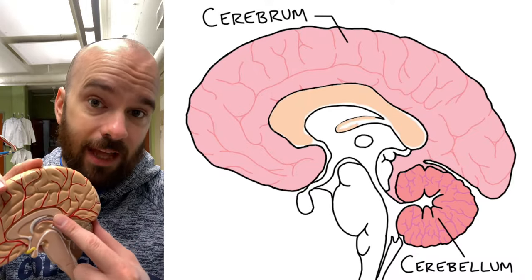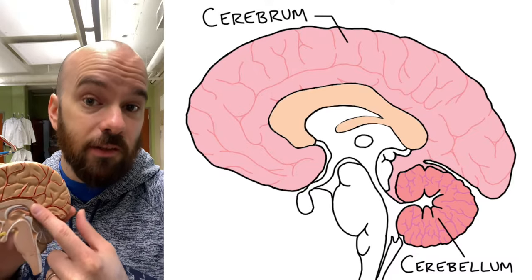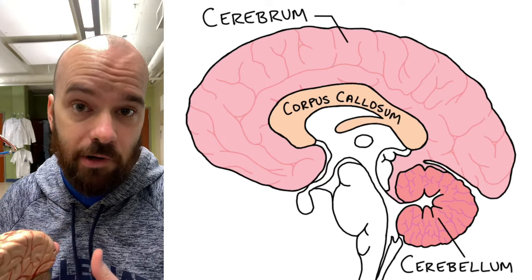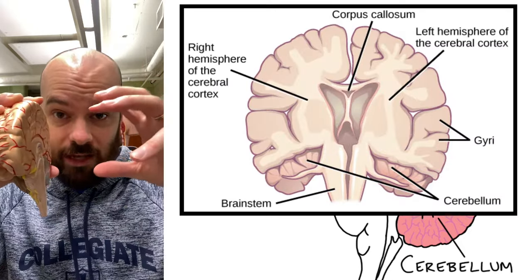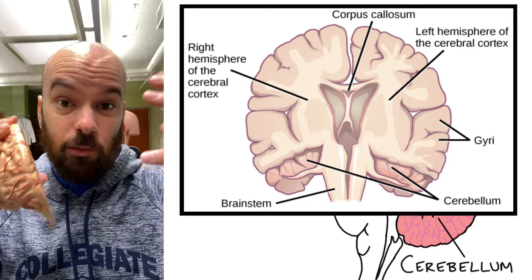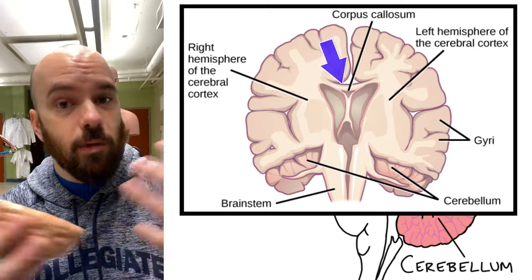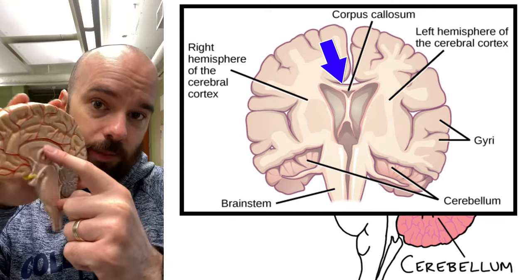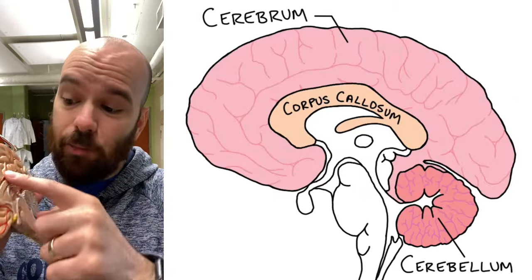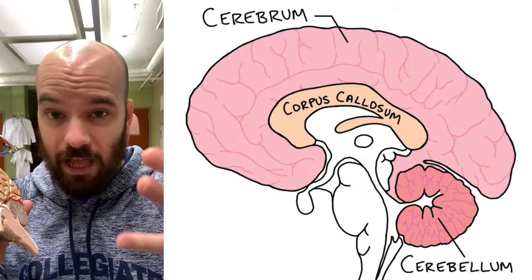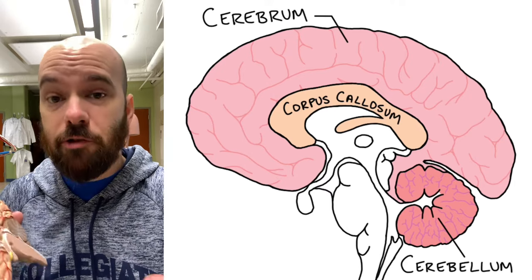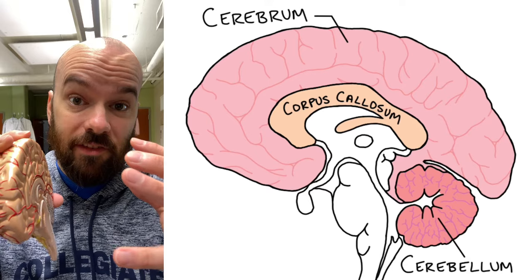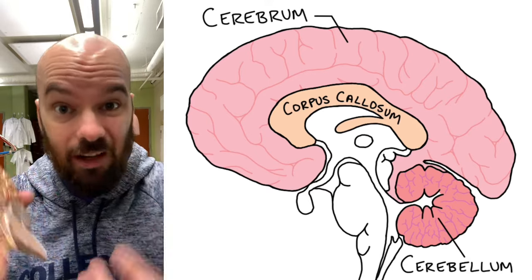The first structure I want to talk about is the corpus callosum, which connects the two halves — or two hemispheres — of the cerebrum. We have a right hemisphere and a left hemisphere, and for a lot of functions they work independently of each other, but they need to communicate back and forth. They do that through a system of nerves in the corpus callosum. An interesting fact: when people have really bad seizures, one of the treatments is cutting the corpus callosum, which causes the two halves of the cerebrum to actually work independently of each other.